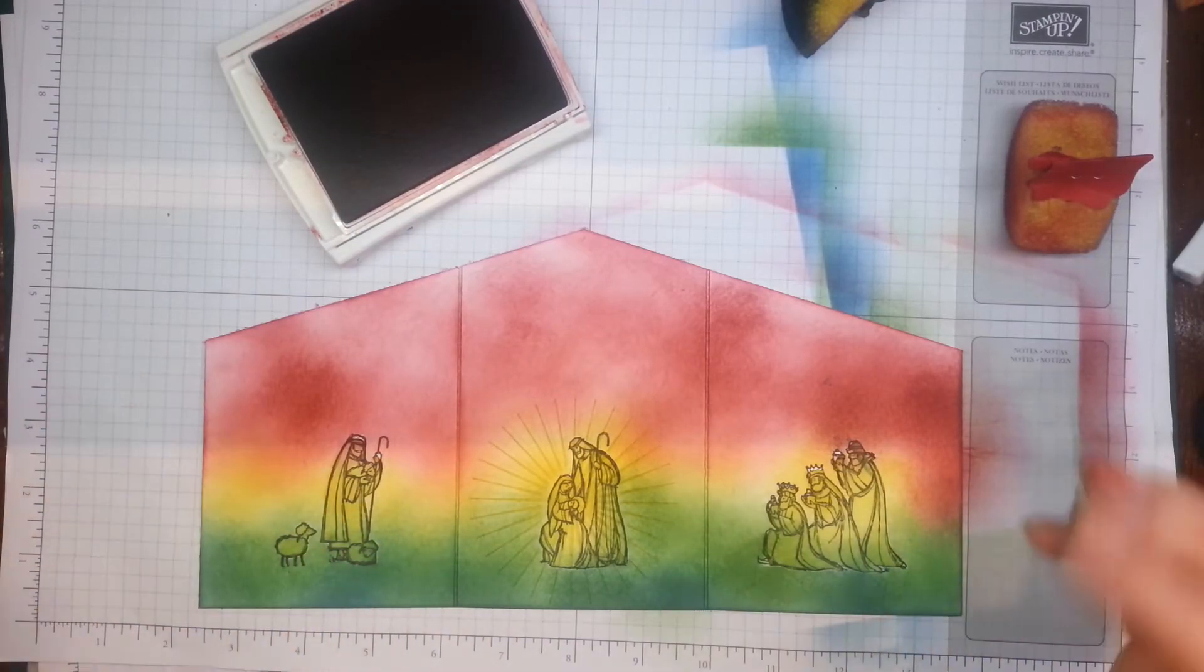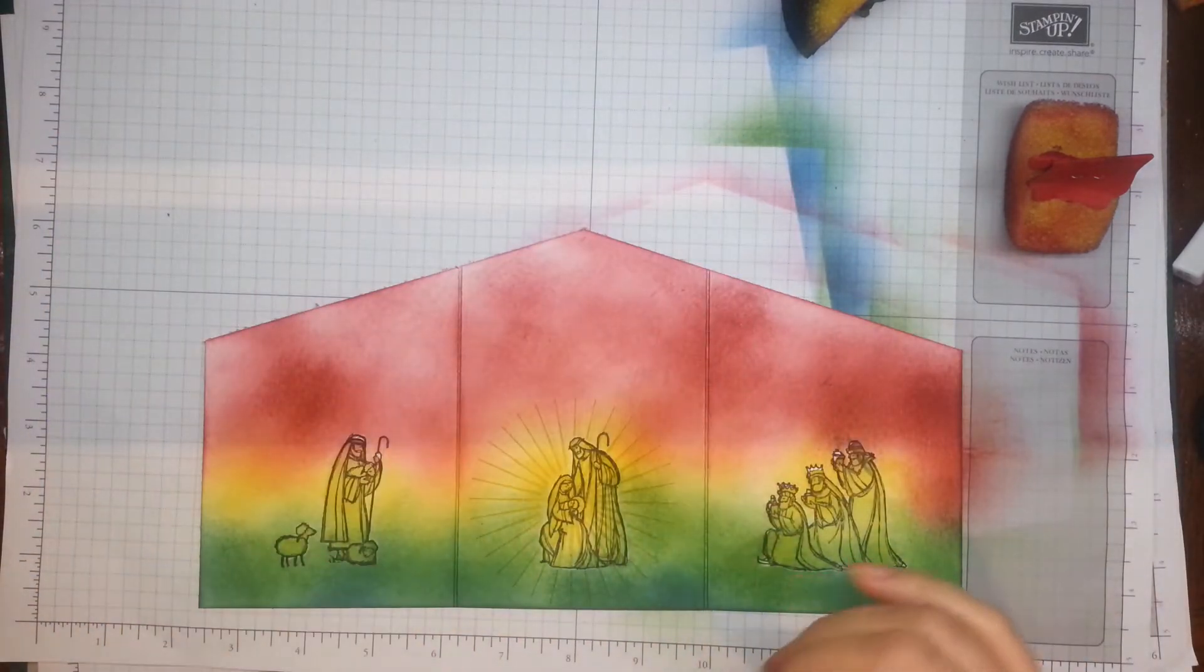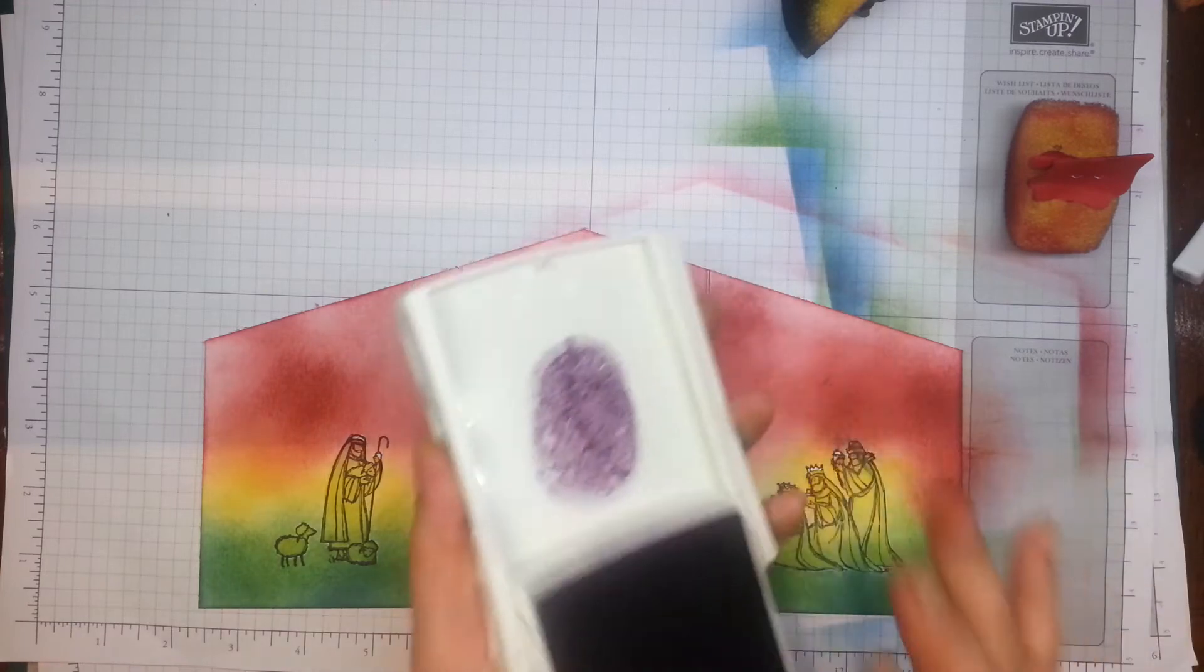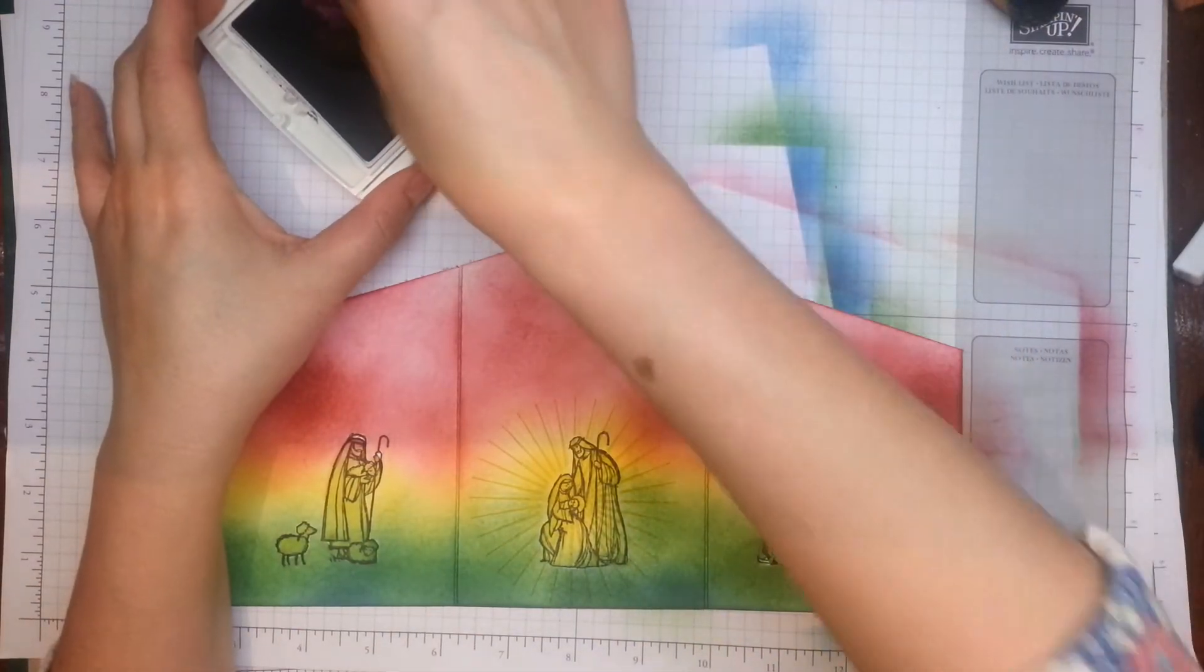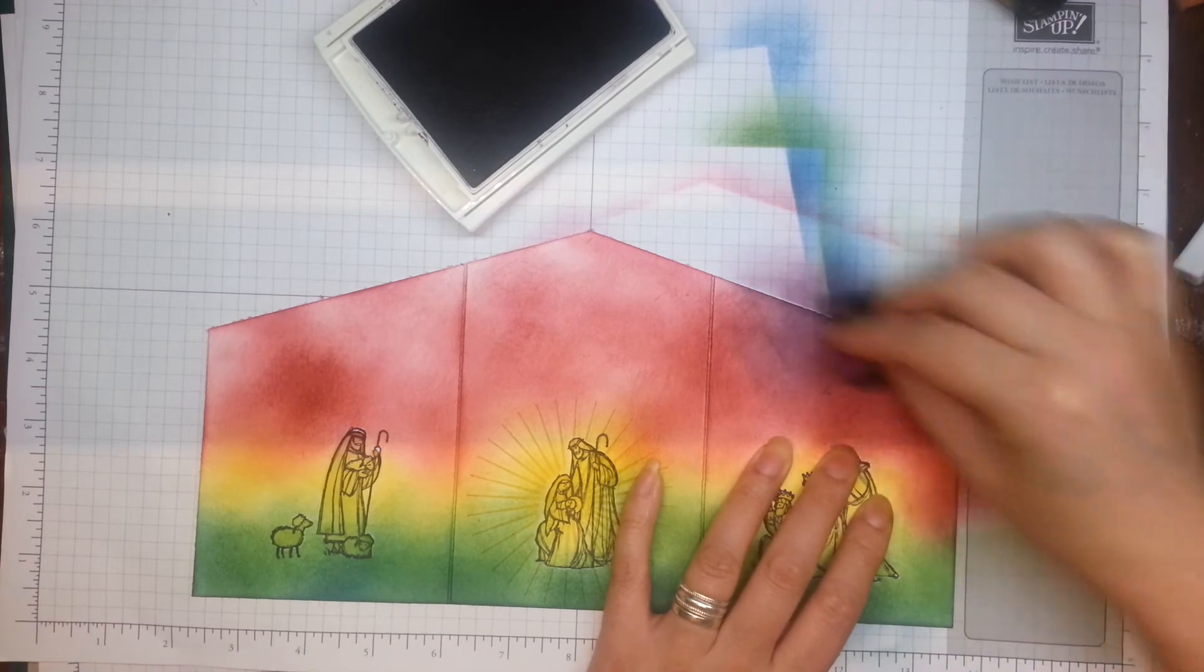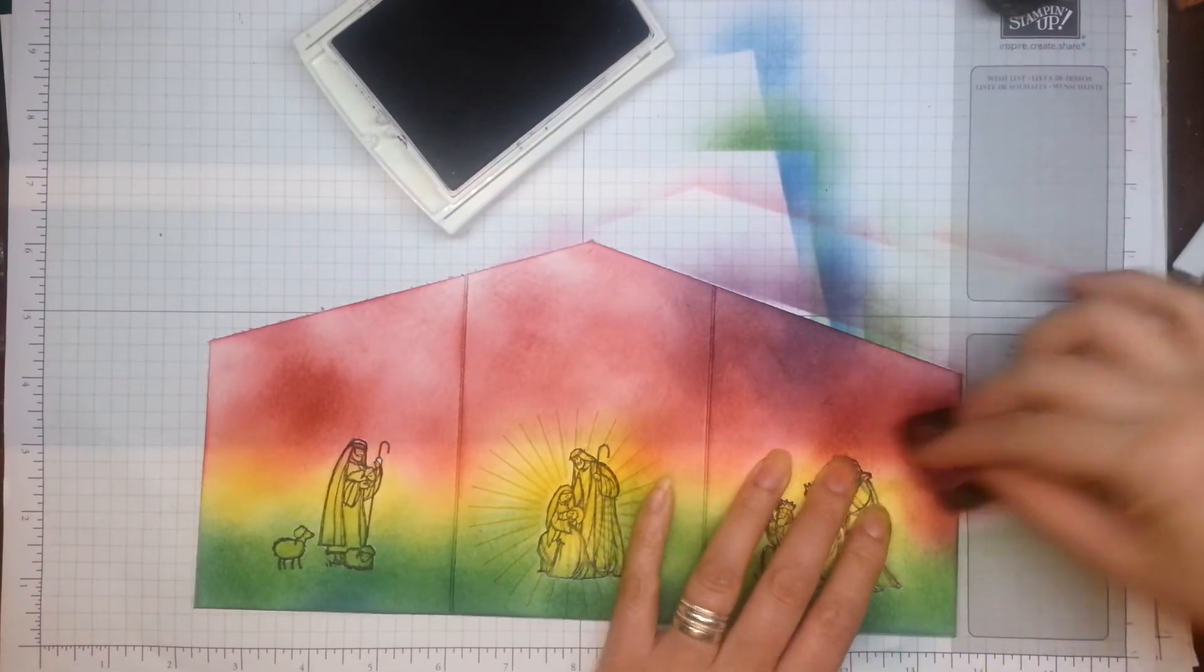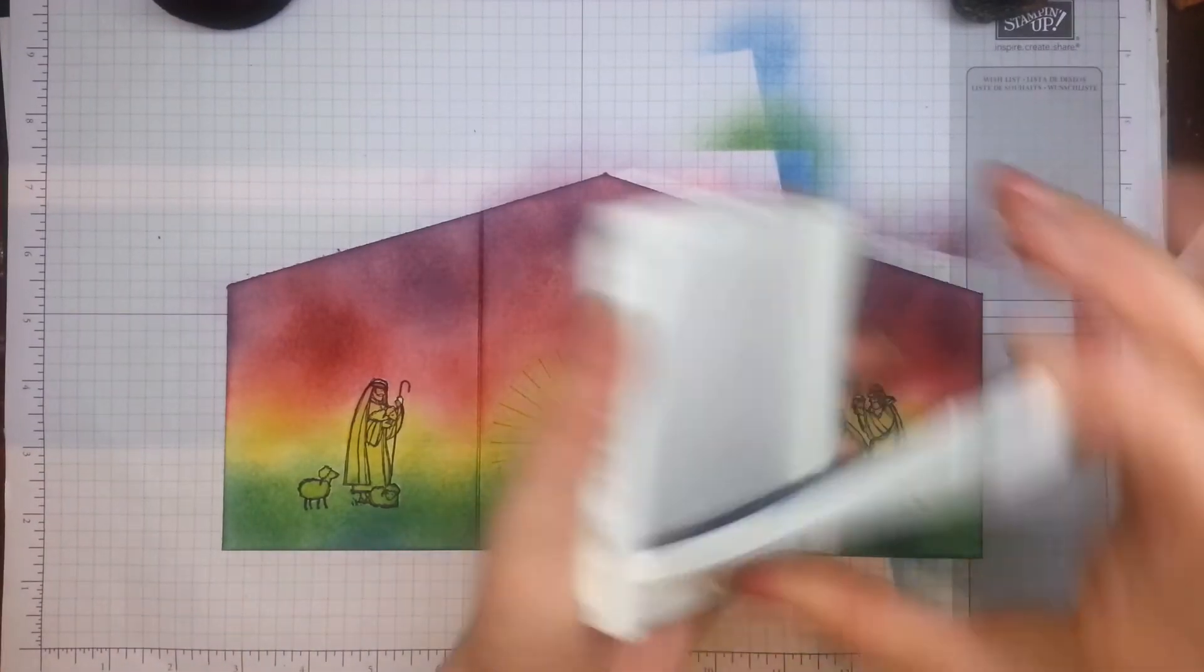So I'm just adding a little bit of Cherry Cobbler now to the layer up here. Okay, so that's the Cherry Cobbler. The reason I've gone for quite rich kind of vibrant colors is because I was inspired by the look that stained glass windows tend to have in churches. So they tend to be very rich bold colors.